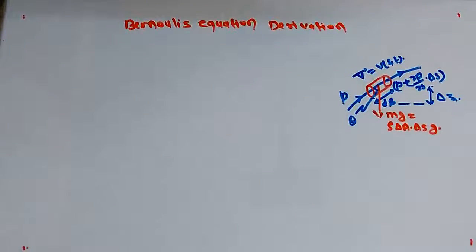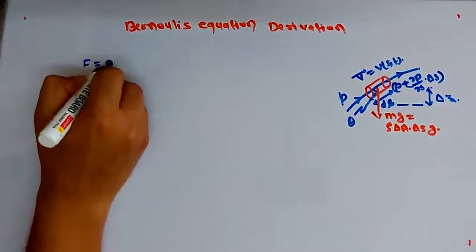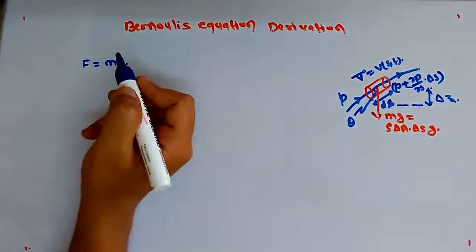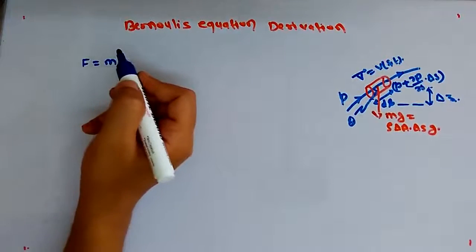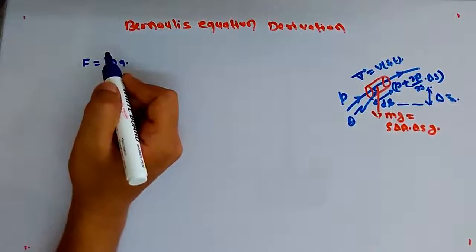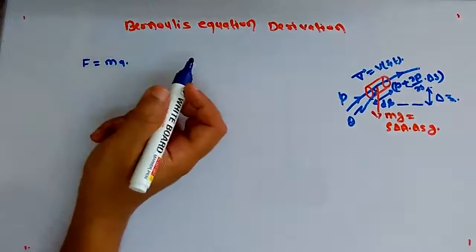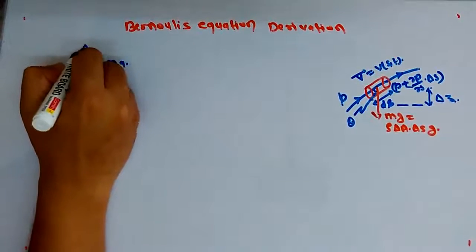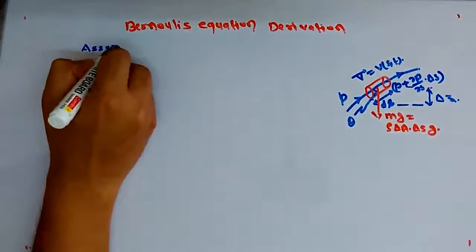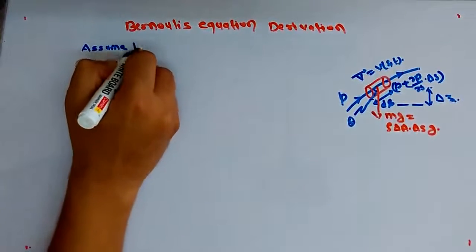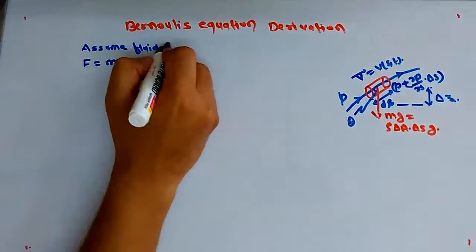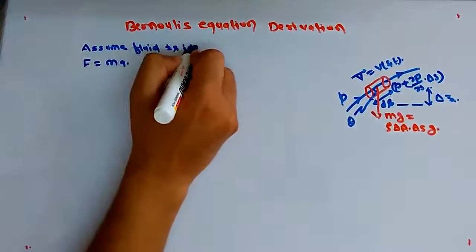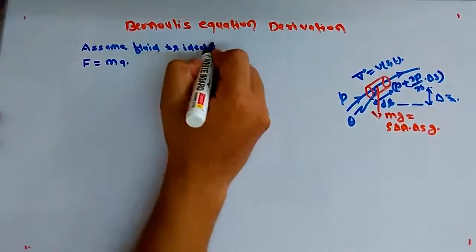By Newton's second law of motion, force equals ma. We do a force balance or momentum balance to derive the Bernoulli equation. Here we assume the fluid is ideal, meaning viscosity equals zero.